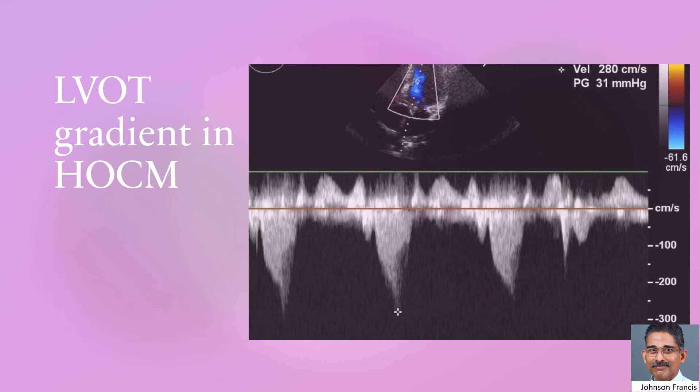The typical dagger-shaped or sickle-shaped LVOT gradient pattern in CW Doppler is demonstrated in this picture. We can see that the beginning gradient is low and it increases as systole progresses, peaking towards late systole. This is the dynamic nature of the obstruction, and it is also seen that there is variation in the gradient from cycle to cycle. These are all part of dynamic LVOT obstruction in hypertrophic obstructive cardiomyopathy.